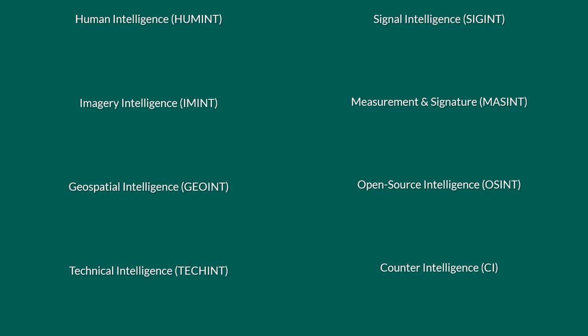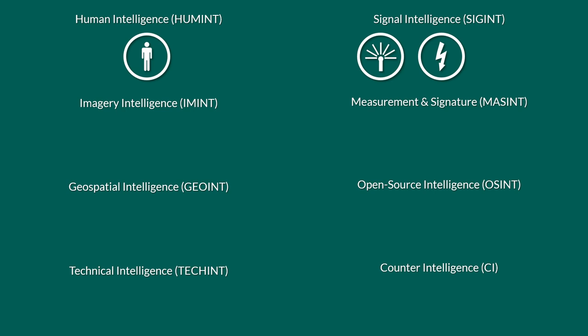Human intelligence is probably the oldest and most low-tech of these. It is concerned with information that is collected and provided by human sources, like James Bond, but also the interrogation of prisoners or simple informants. Signal intelligence deals with the intercept and analysis of signals, which are not limited to communication signals — for instance, detecting various electric emissions. One important part of signal intelligence is cryptanalysis, which deals with the deciphering of messages, whereas another is traffic analysis, which deals with patterns.